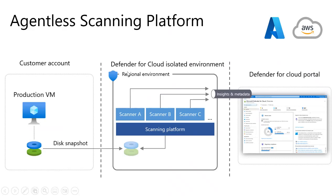Defender Vulnerability Management solution does a deep analysis to check for vulnerabilities, and the results are sent to the Defender for Cloud portal. From there, Defender for Cloud immediately deletes the copied snapshot of the disk. Just to give a heads up, agentless scanning for VMs is currently supported for AWS and Azure VMs.